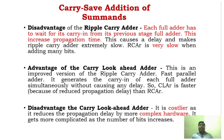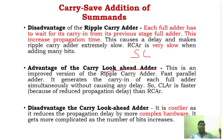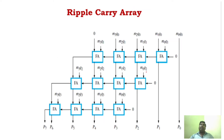We have already seen various adders — ripple carry adder and carry lookahead adder as a fast adder. In ripple carry adder, the carry propagates from LSB to MSB, which takes more time and causes high delay. To overcome this, we use carry lookahead adder, which generates sum and carry in parallel, working faster. However, the drawback of carry lookahead adder is that it is costly and has complex hardware.